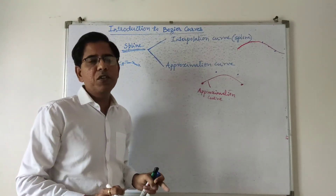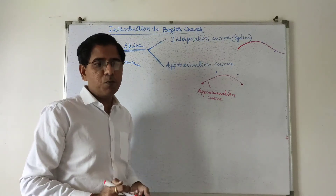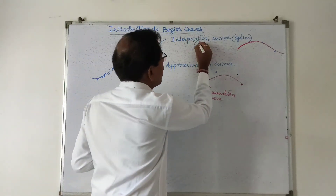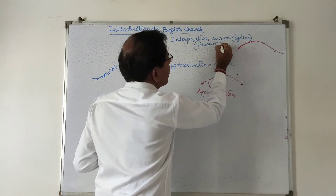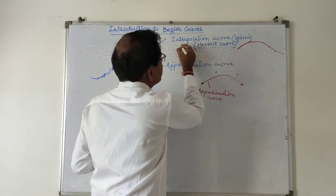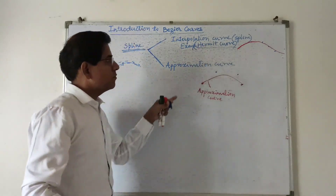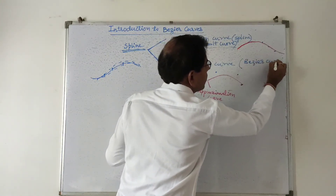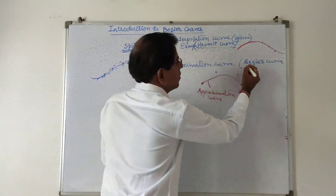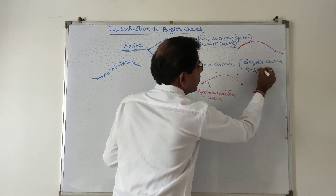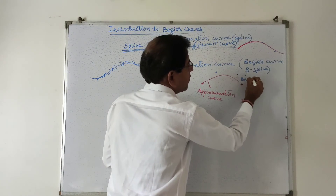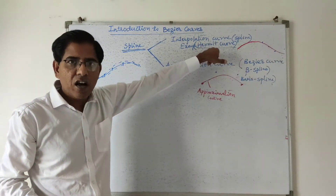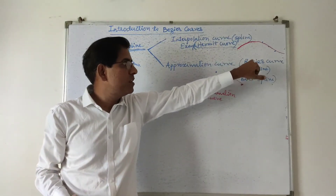So interpolation curve always passes through all control points given by the designer, whereas approximation curve does not necessarily pass through all control points. The example of an interpolation curve is the Hermit curve, and the examples of approximation curves are the Bezier curve and B-spline (also called basis B-spline).